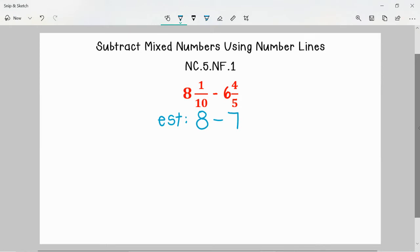And I know that 8 minus 7 would be 1. So this lets me know that our answer will be close to 1. It will actually be a little bit more than that since I rounded down the amount we were subtracting from and rounded up the amount that we were taking away. However, our answer will be close to 1.